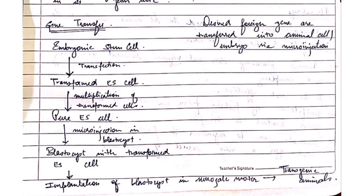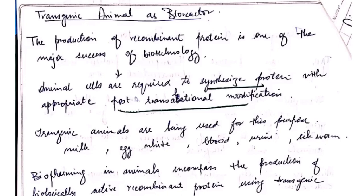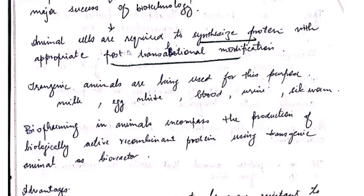Multiplication occurs and pure embryonic stem cells are formed, then they are injected by microinjection into the blastocyst. The blastocyst is transformed with embryonic stem cells. In simple words, we have taken a stem cell with the characteristics we need and put it into an animal in which we want to see those characteristics. This is called surrogacy, and the desired alterations give us the transgenic animal.